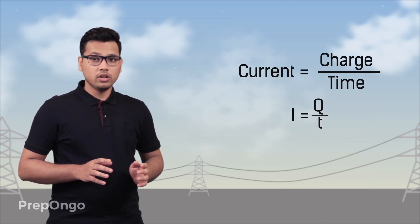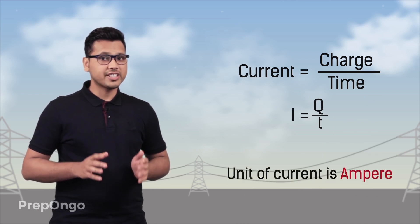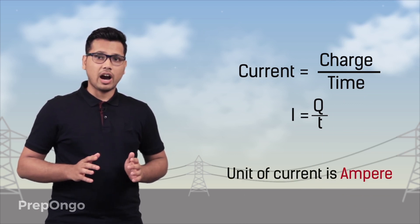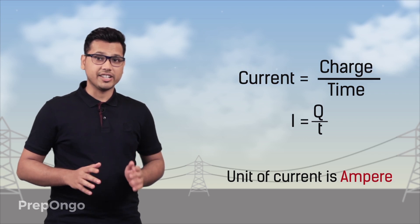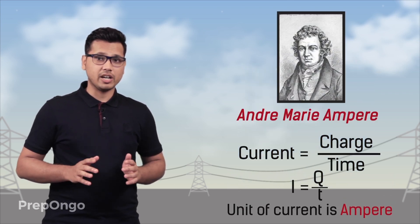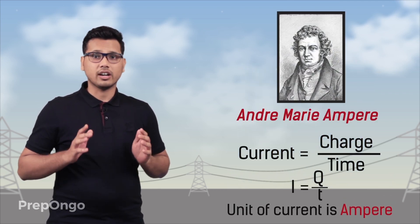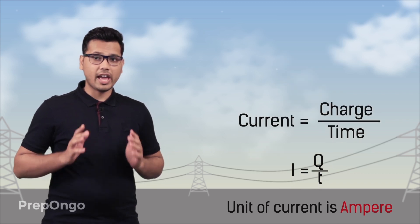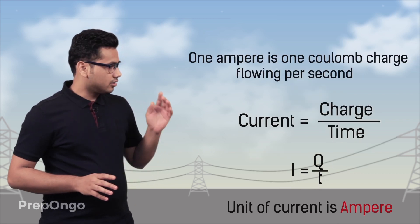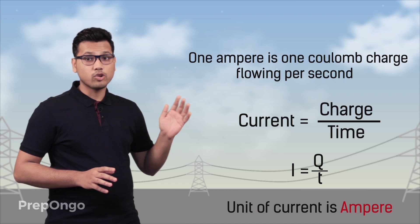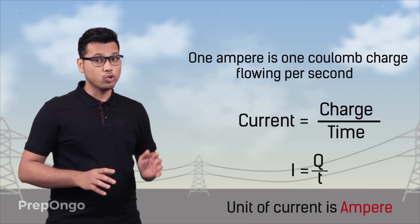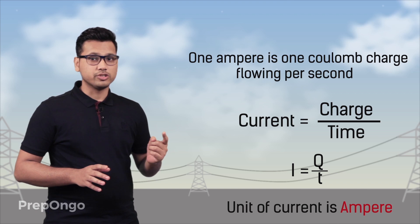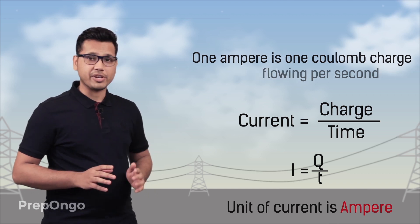The SI unit of electric current was named ampere after the French scientist André-Marie Ampère for his work in current electricity. We can define one ampere as one coulomb of charge flowing through the conductor in one second. So this constitutes one ampere.